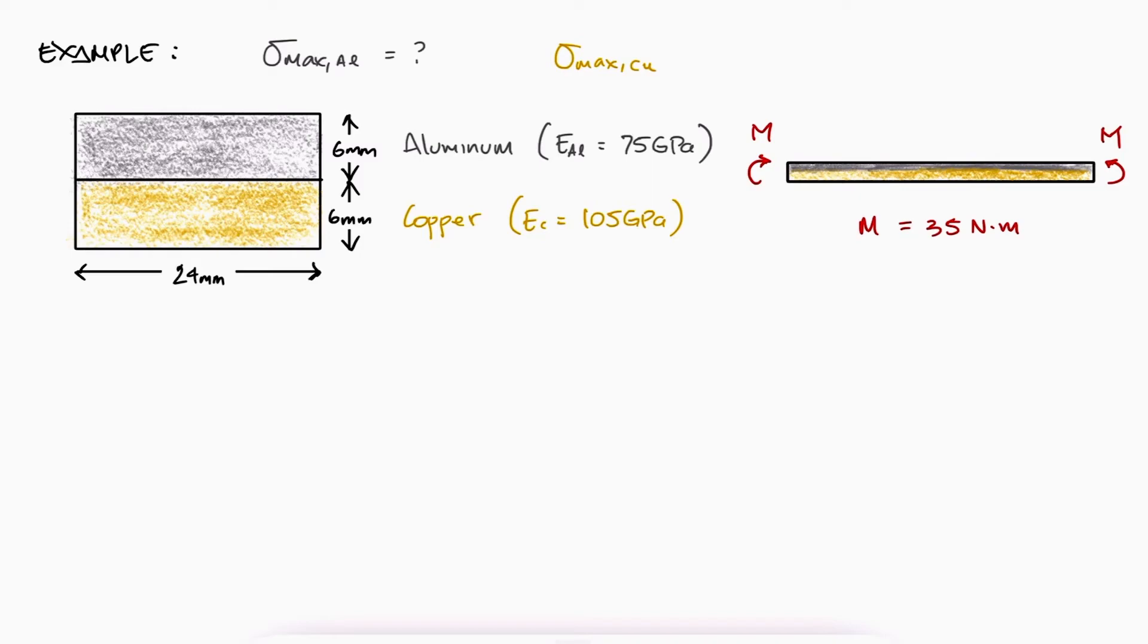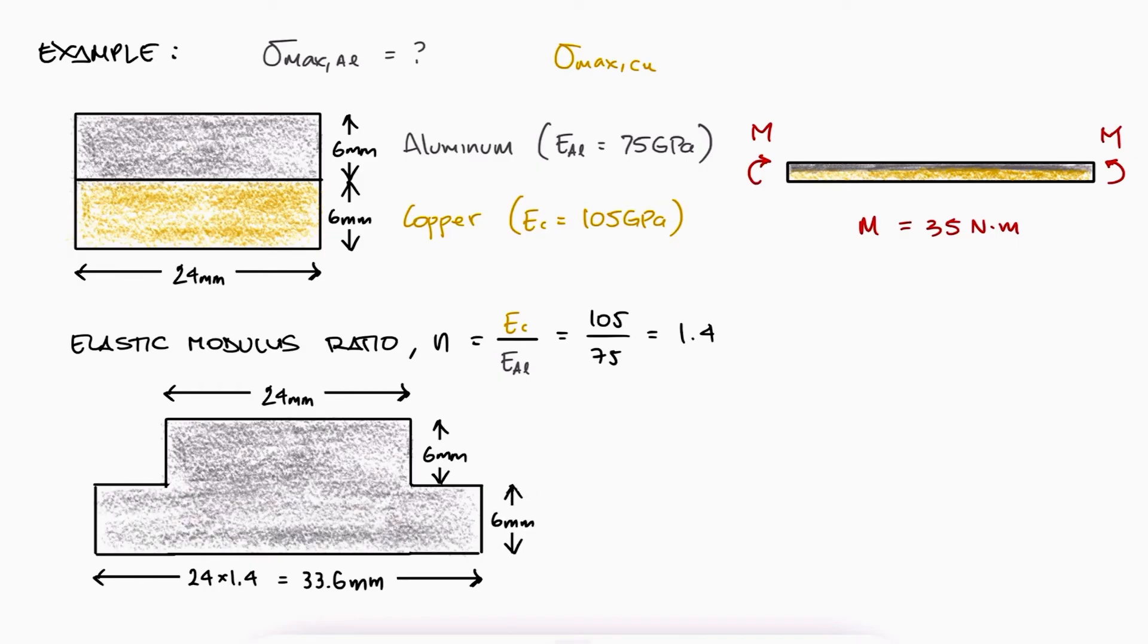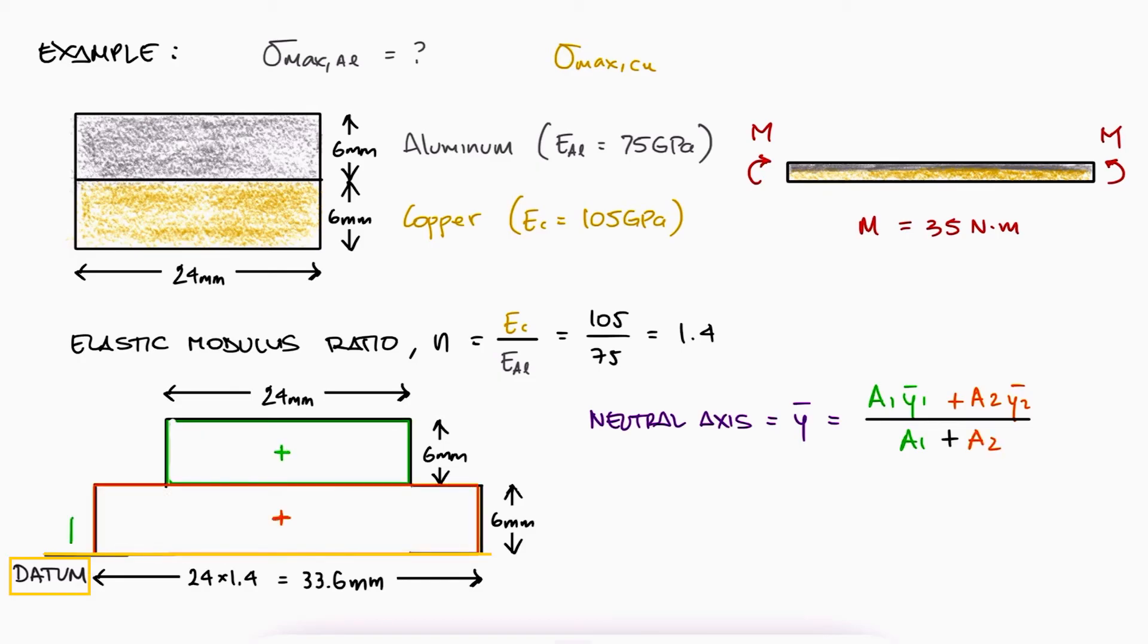Following the steps that we mentioned in this video, we will begin by calculating the ratio between the elastic moduli. We can transform the aluminum to be thinner or the copper to be thicker. Let's transform the copper into aluminum, which means that the elastic modulus ratio n would be 1.4. The transformed section would be all aluminum, with the bottom half being 1.4 times the 24 millimeters. The neutral axis can be calculated by calculating the centroid of this new cross section by adding the AY bars together and dividing by the total area. The Y bar values would be the distance from our datum or point of reference to the centroids of the two shapes that make up our cross section.